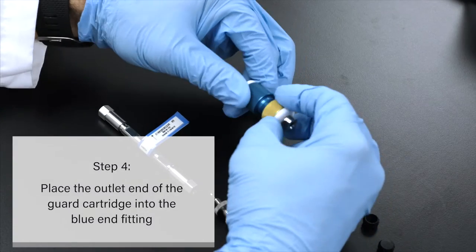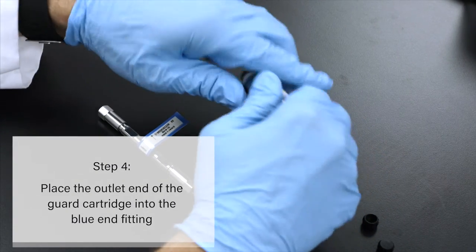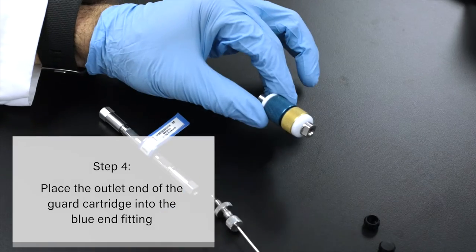Place the outlet end of the guard cartridge into the blue end fitting of the Sentry Guard Cartridge Holder and tighten the two halves until finger tight.